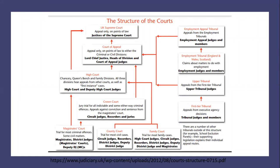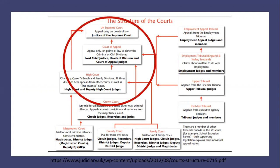I want to talk briefly about the structure of the court system in England. To simplify this diagram, I've circled the higher courts and the ones that sit below are the lower courts. The higher courts would be the High Court, Court of Appeal, and UK Supreme Court — the UK Supreme Court is the highest law of the land in the UK. The lower courts include the Crown, Magistrates, County, and Family Courts.